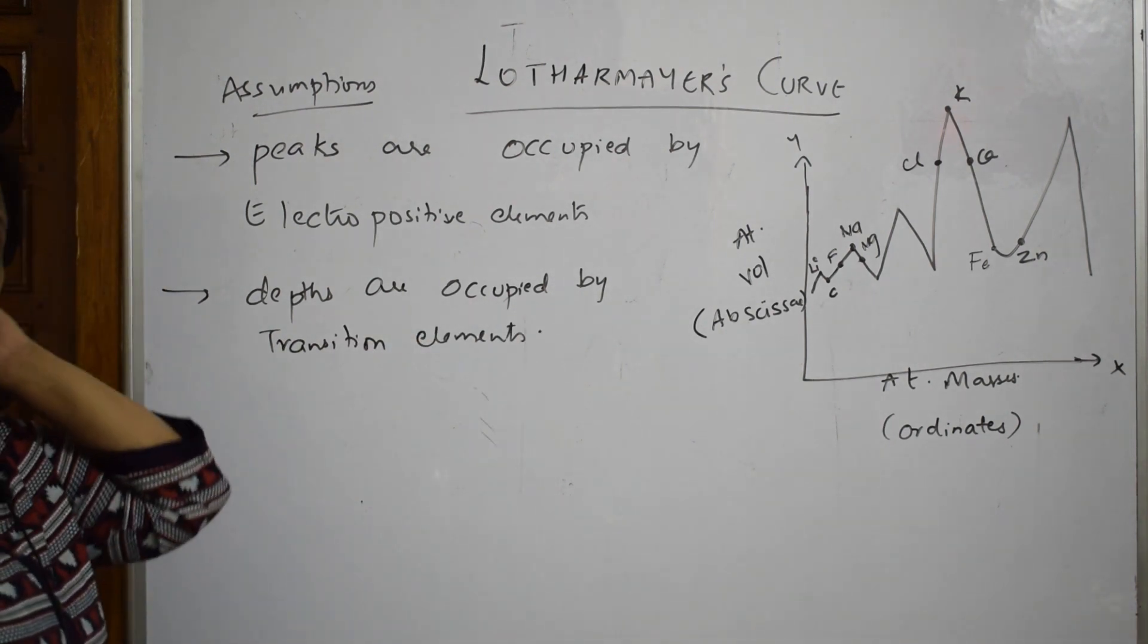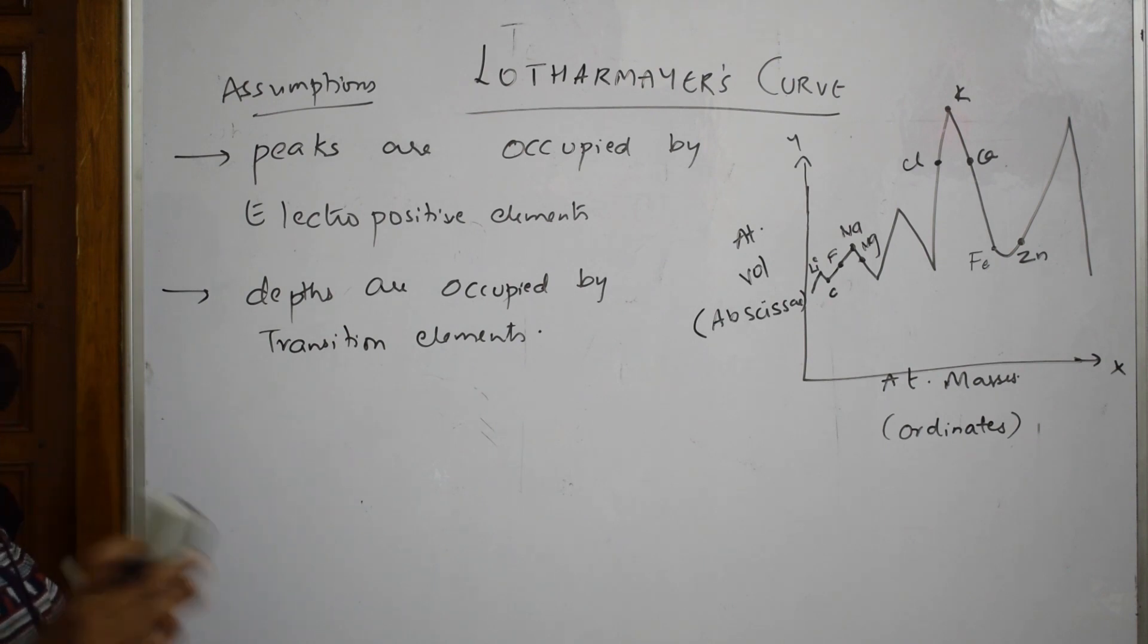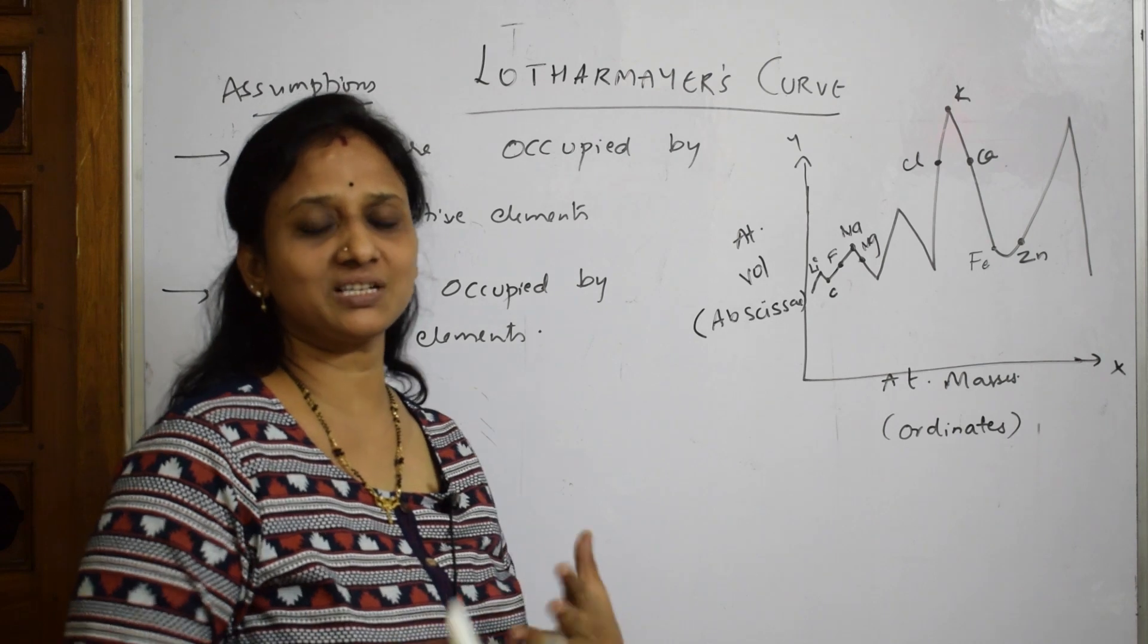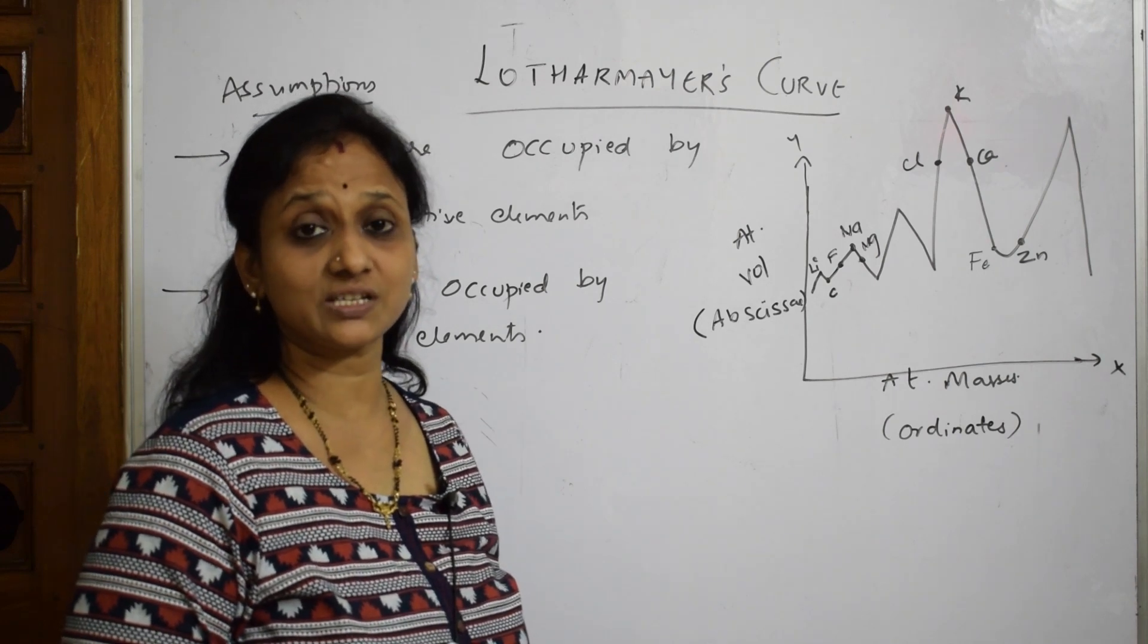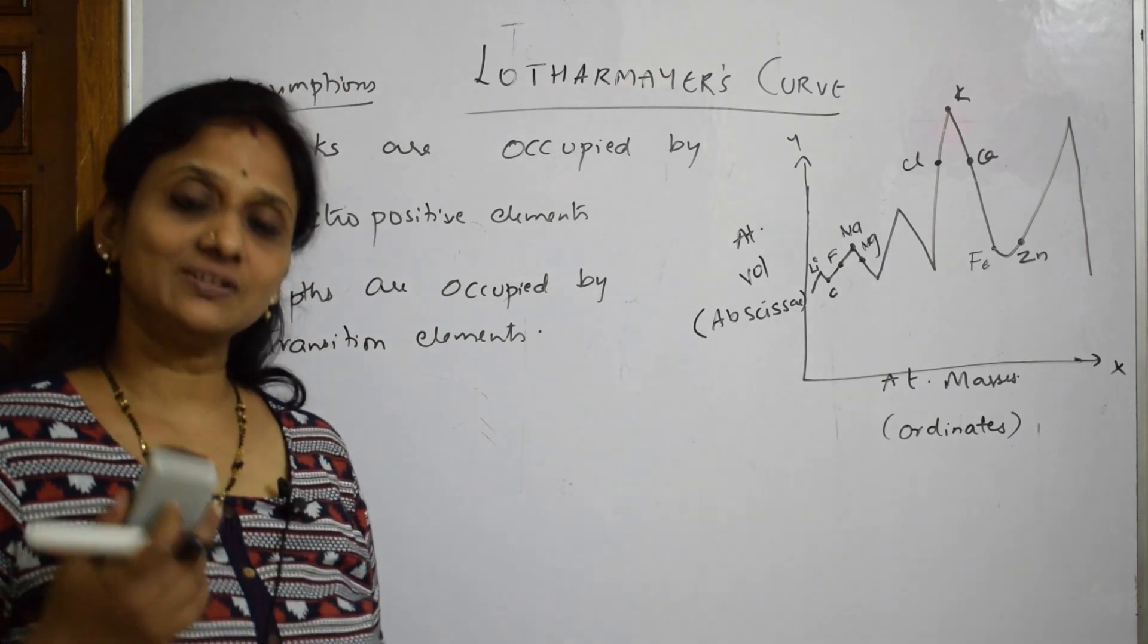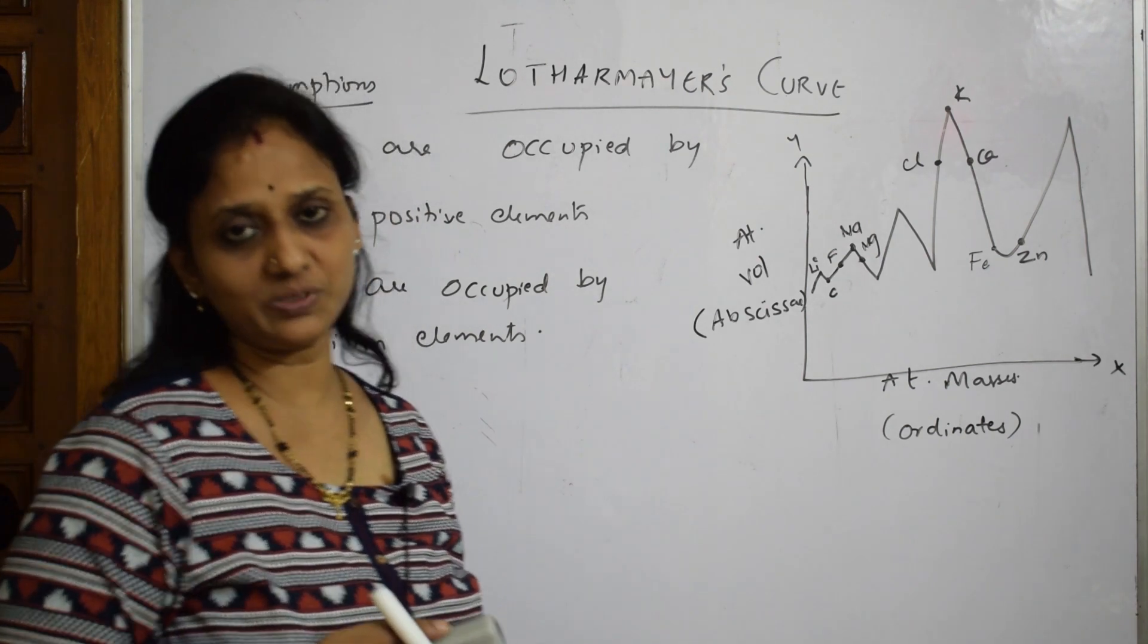This is what he said. And next important thing, whatever elements he is, just he could represent in the form of graphs, but not much given, information given to us. But when next, after when Mendeleev came, the thorough explanation with certain limitations also were given, which you will be see now.